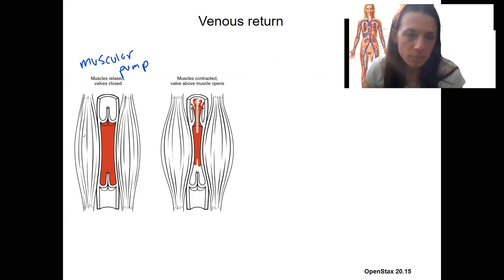So the skeletal muscles, this might be your gastrocnemius, the calf, or whatever. As those muscles contract, so here they're relaxed, here those muscles contract, that actually pushes, it pumps the blood back to the heart. It's going to the heart because the valve that is distal is closed. The valve closer to the heart opens. So the valve opens that muscular pump. The skeletal muscles actually act as a pump to squeeze the blood back to the heart.